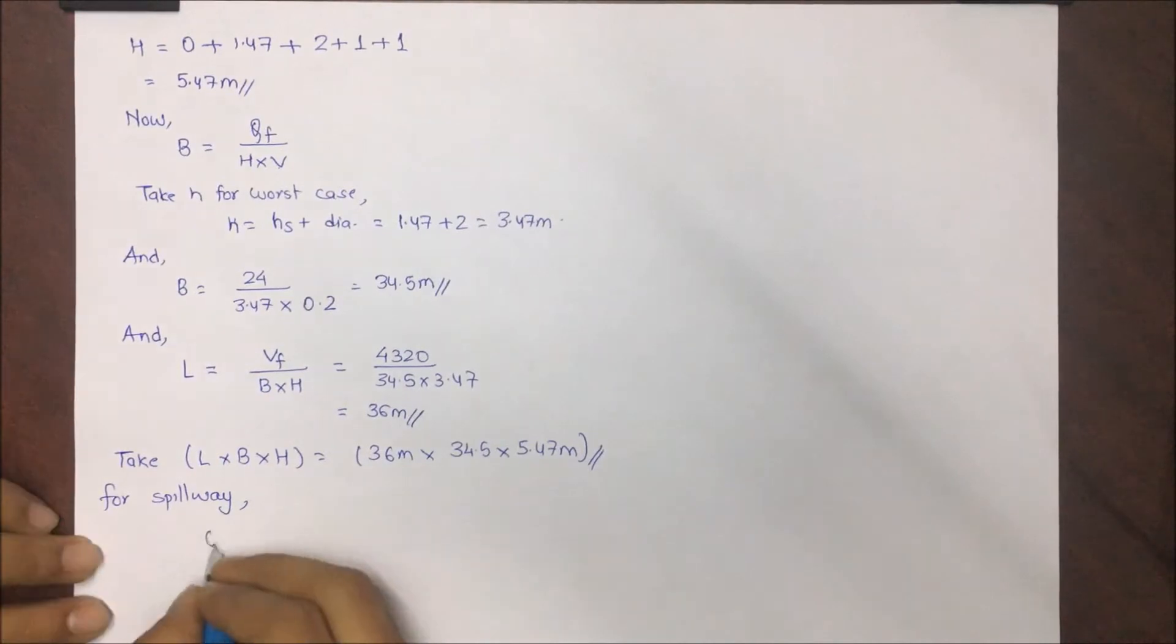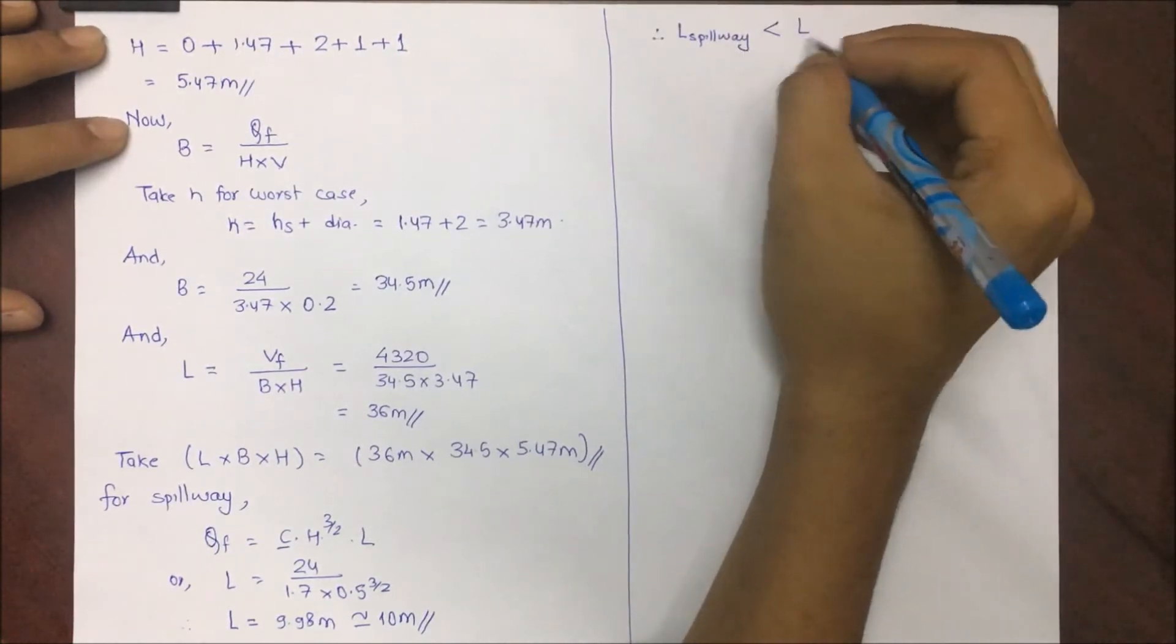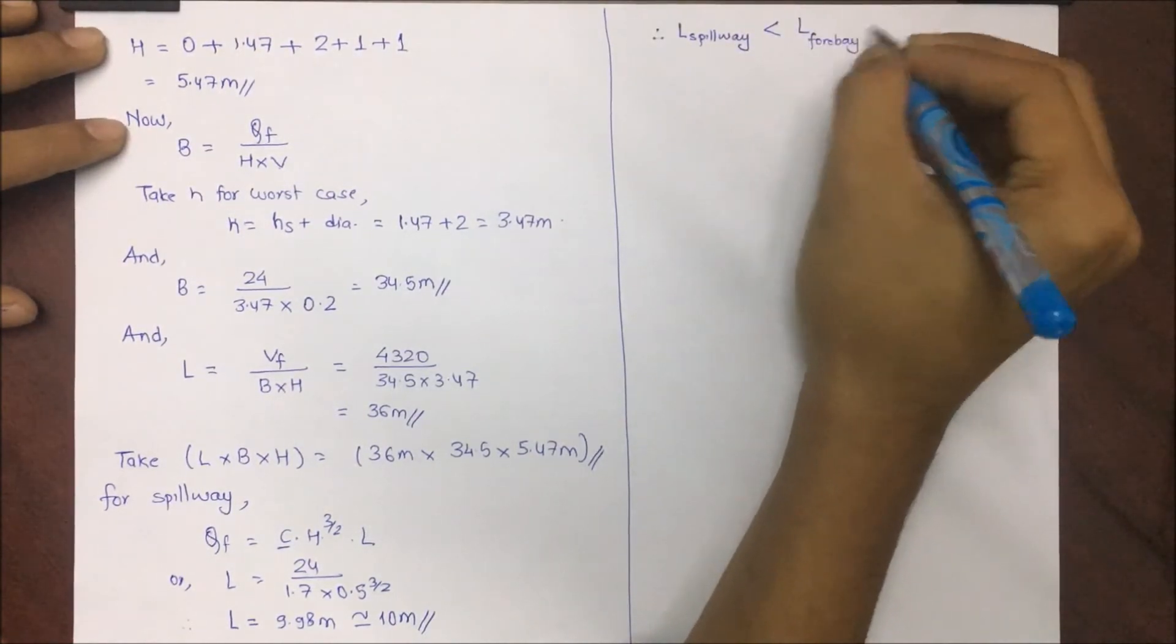For the spillway we have to calculate the length. Qf equals Cd into s to the power 3 by 2 into L. L equals Qf that is 24, and C is the coefficient of discharge for a spillway which is 1.7 into 0.5 to the power 3 by 2. This comes to 9.98 meter, taking this value as 10 meters.